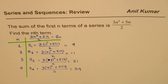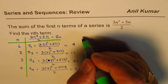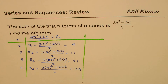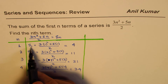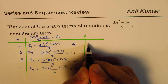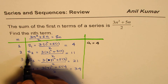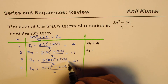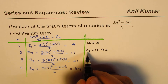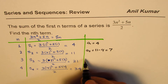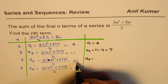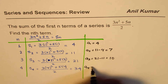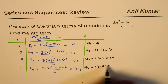Now we have the sums. From these, can we find the individual terms? The sum of the first term is 4, so the first term A1 is 4. The sum of two terms is 11, so A2 is 11 minus 4 = 7. The third term is 21 minus 11 = 10. The fourth term is 34 minus 21 = 13.